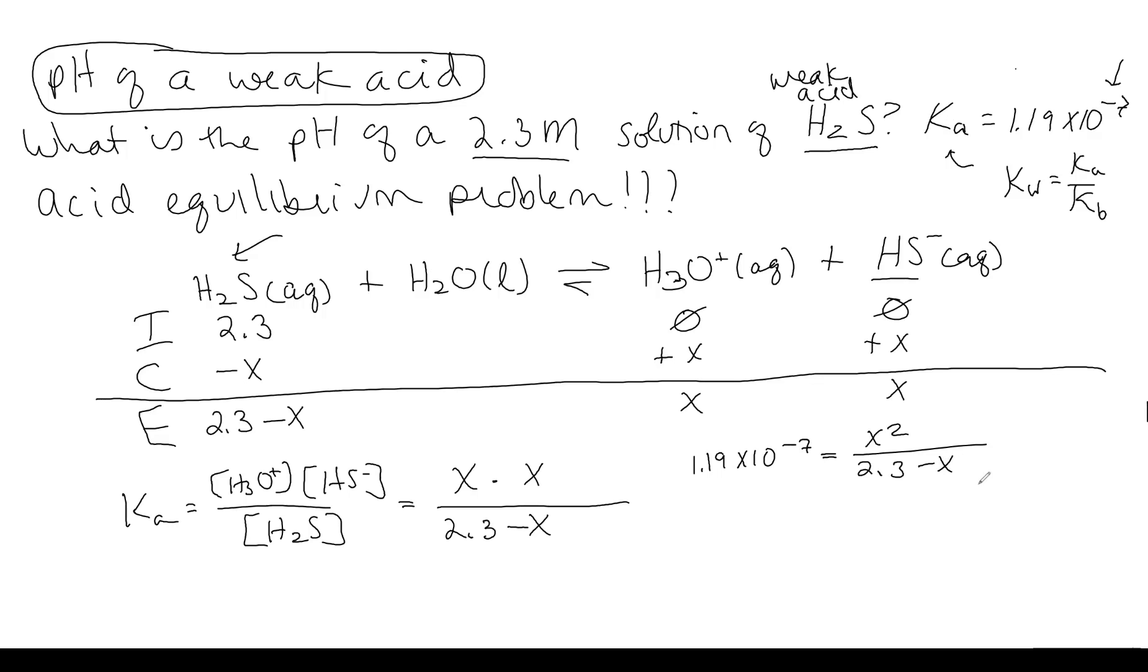So X is going to be really small because our equilibrium constant, the Ka value, is very small. It has a small exponent. So that means we can assume this is negligible or zero. And that gives us a much better equation to solve. And now let's go ahead and solve it.